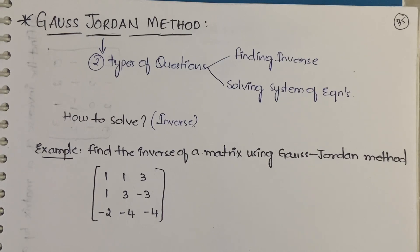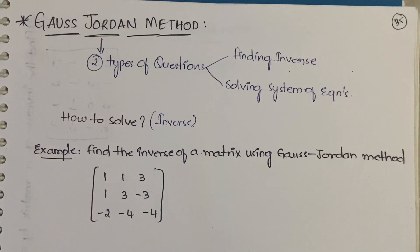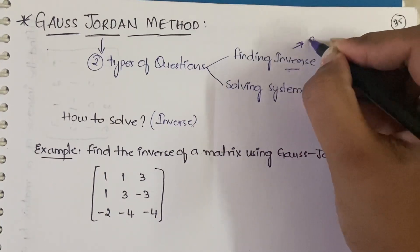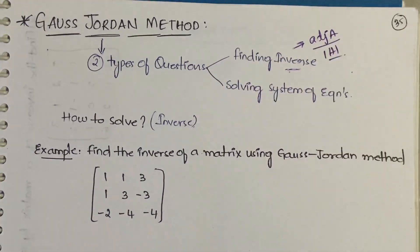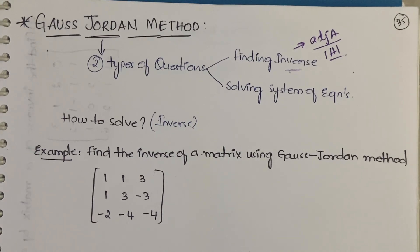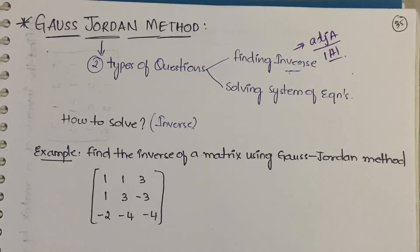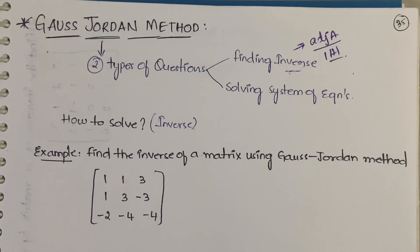Using the Gauss-Jordan method you can solve two types of questions. The first one is finding the inverse of a matrix. You may know the formula: adjoint A divided by det A. However, sometimes you'll be asked to find the inverse using elementary transformations. So if the question asks you to find the inverse using elementary operations, you can use the Gauss-Jordan method.